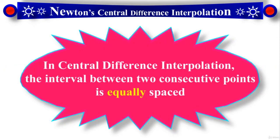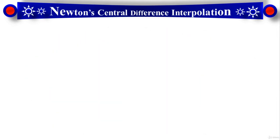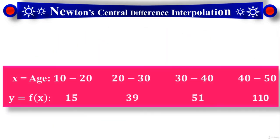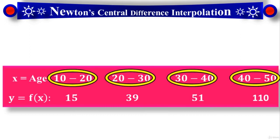In Central Difference Interpolation the interval between two consecutive points is equally spaced. It's exactly what we had for Newton forward and Newton backward. There's a 10 degree difference between two consecutive points: 10 to 20, 20 to 30, 30 to 40, 40 to 50. So the difference between two consecutive points is equally spaced.